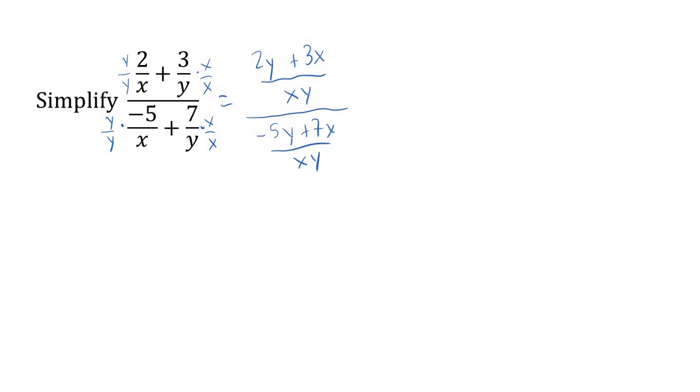Now I have a fraction divided by a fraction, so let's rewrite it. Multiply by the reciprocal: 2y plus 3x over xy times xy over negative 5y plus 7x. I'm just flipping the bottom fraction.